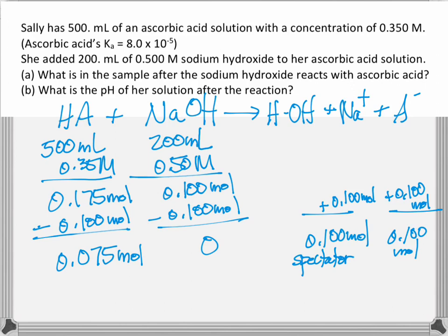So now we need to go on to the next step and figure out the pH. What we have in our solution at this point is ascorbic acid and ascorbate. You can call it sodium ascorbate if you like. So now we're going to go to step B and figure out what is the pH of this solution after the reaction happens. Remember that the ascorbate is the conjugate base of ascorbic acid.